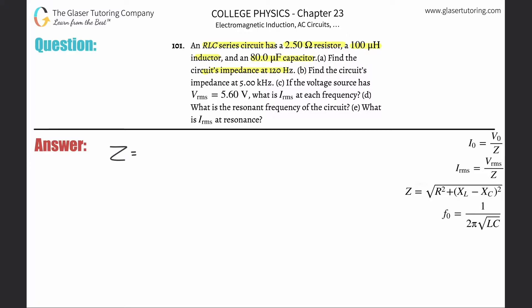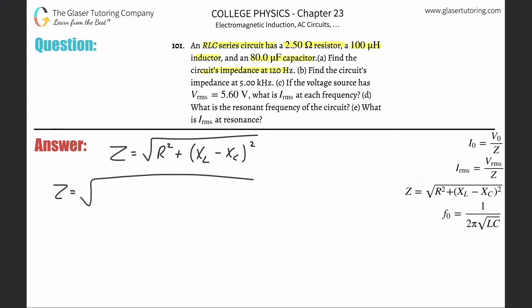Impedance Z is equal to the square root of the resistance squared, plus the difference between the inductive reactance and the capacitive reactance, squared. They didn't give us the reactive parts directly, so we'll substitute. The inductive reactance is 2π times frequency times inductance. And it's subtracted from one over 2π times frequency times capacitance — the capacitive reactance. That whole difference is then squared.